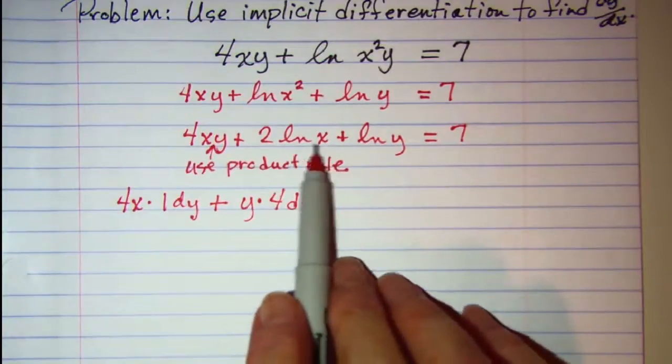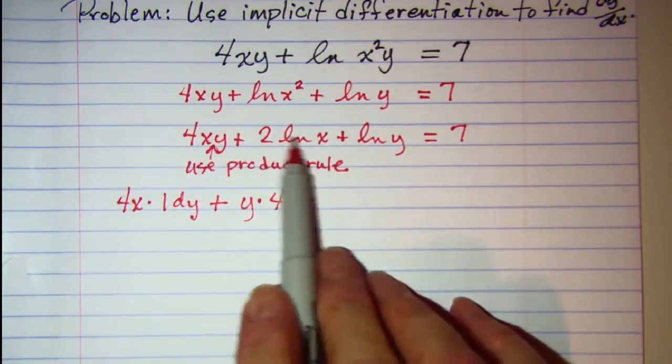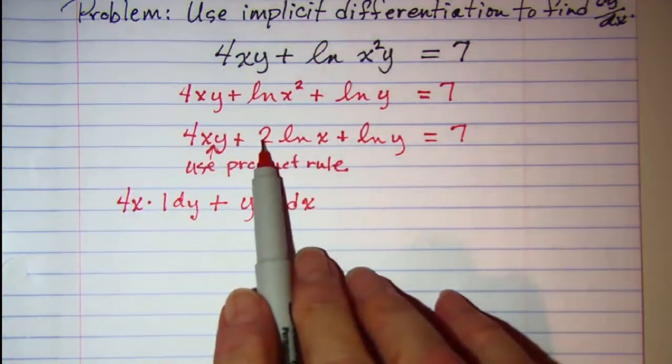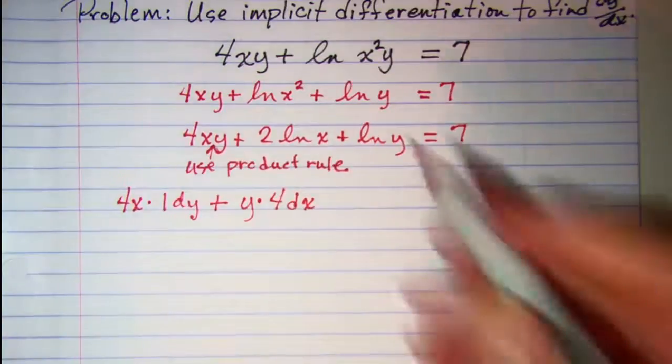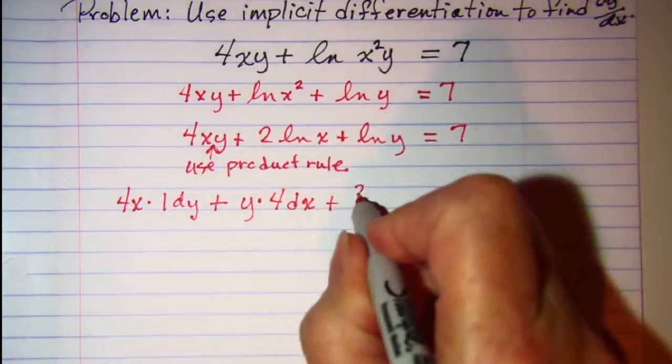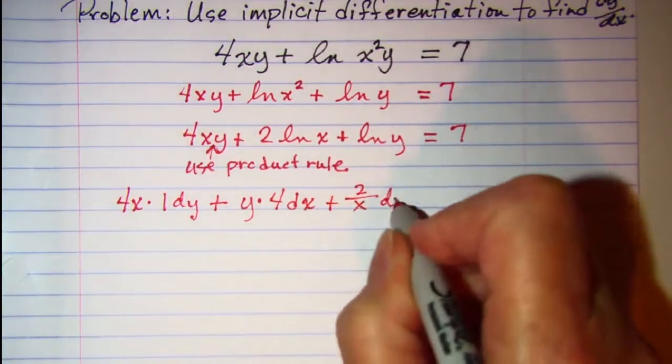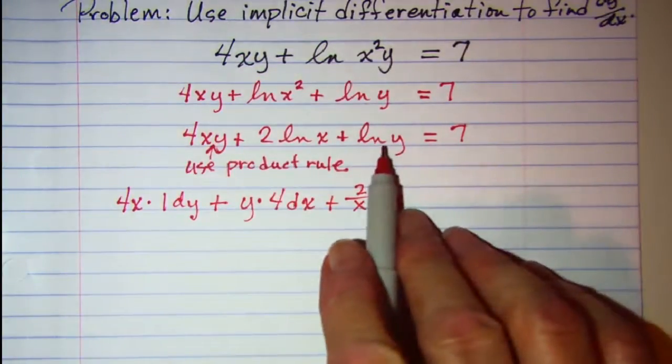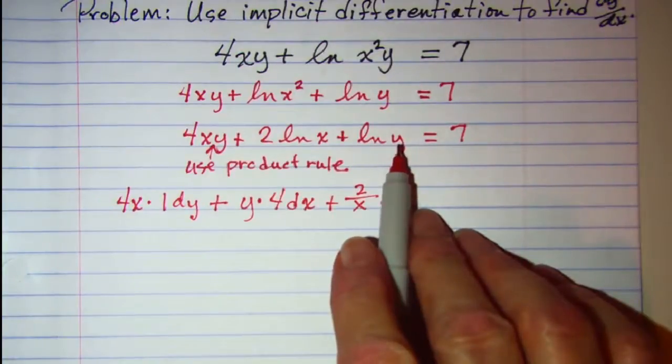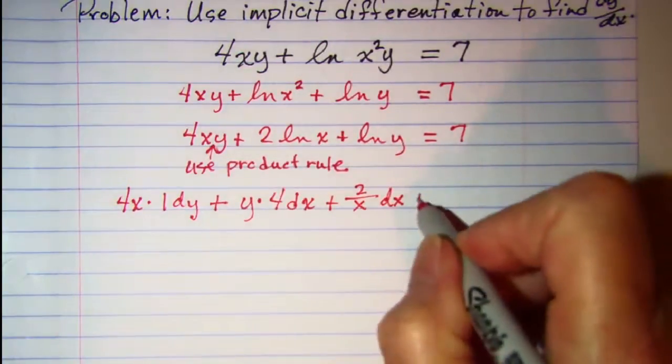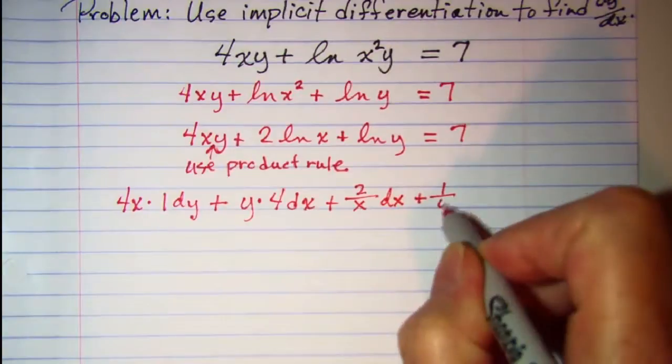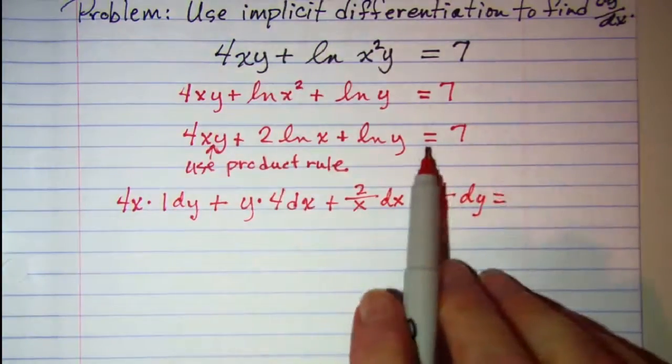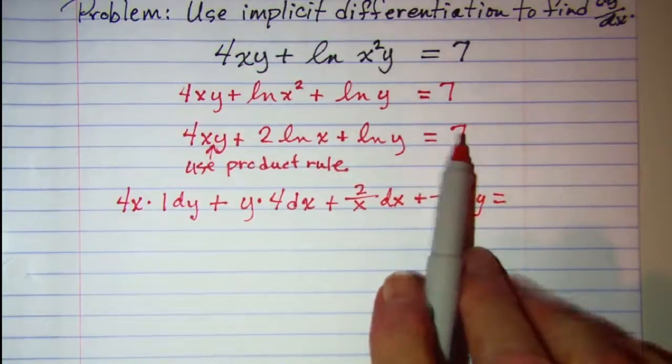Then the derivative of this term will have the derivative of ln x is 1 over x. So we'll have 2 over x dx. And then the derivative of ln y is 1 over y, so we'll have 1 over y dy. And on the right side the derivative of a constant is 0.